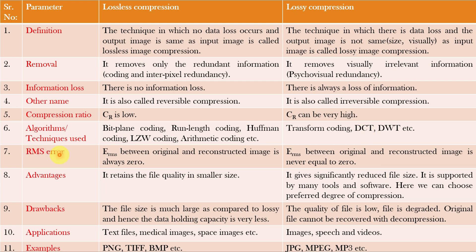The root mean square error (ERMS) between the original image and the reconstructed image is always 0 for lossless compression, because there is no error in reproduction of the original image. Whereas for lossy compression, ERMS will never be equal to 0 — there will always be a certain error introduced.